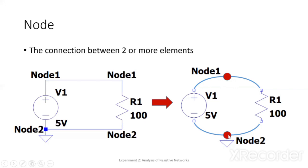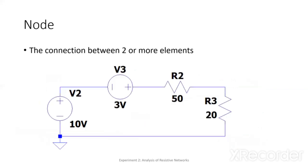So, let's have more elements. For this one, we have V2, V3, R2, and R3. So, here we have four elements or four components.